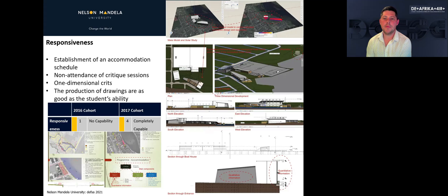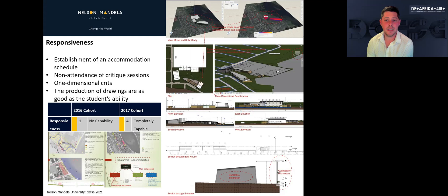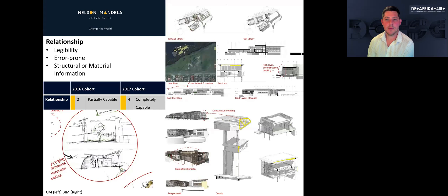The first attribute, responsiveness, is defined as establishing project requirements during the project information stage. The conventional method found that students did not attend their first design critique session, as they were still pondering on what the design was about due to a lack of a structured project and accommodation schedule. Furthermore, when students attended critique sessions, the discussion was one-dimensional due to the lack of different drawing types. On the other hand, the BIM cohort had well-structured project information parameters stating both quantitative and qualitative information, which allowed the students to engage in conversations at the start of critique sessions with different drawing types.